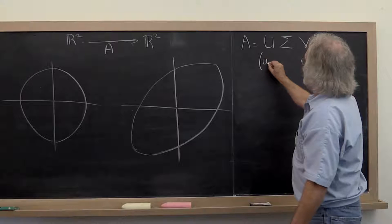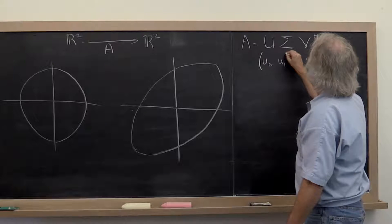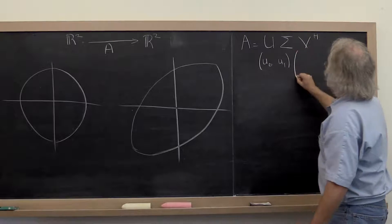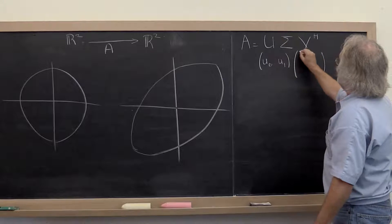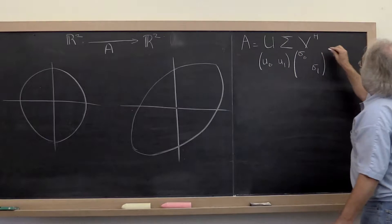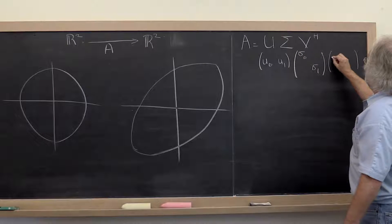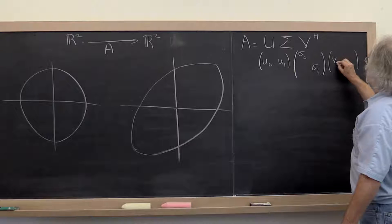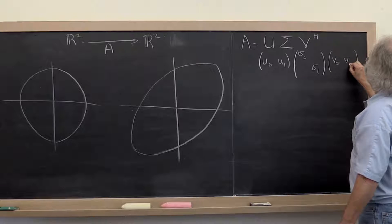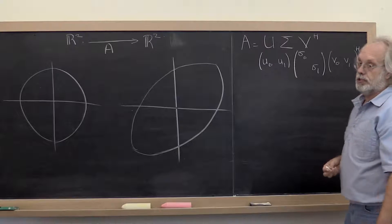In this particular case, U would consist of U0 and U1, Sigma would consist of Sigma0 and Sigma1, and V would consist of V0 and V1.